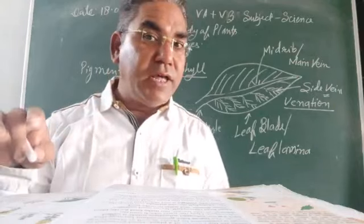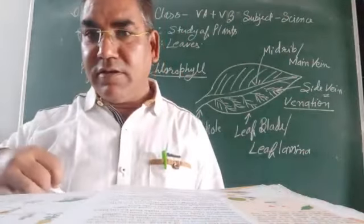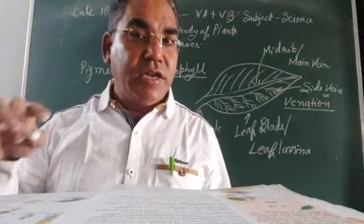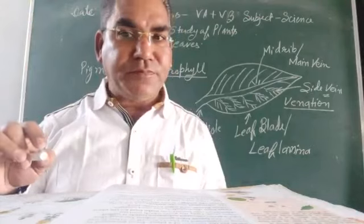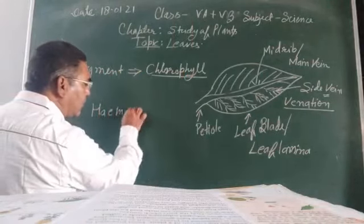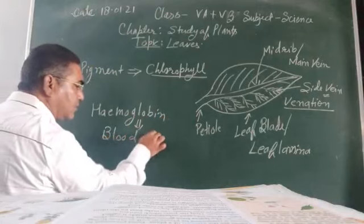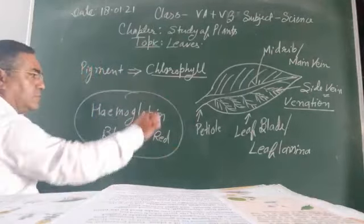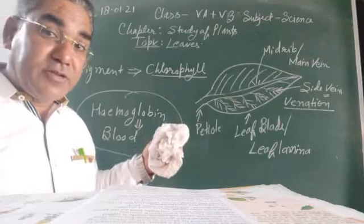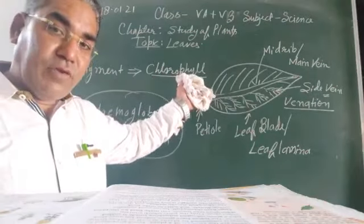Do you know what color your blood is? Yes, our blood is red in color. Why? Due to the presence of a red-colored pigment called hemoglobin. Due to the presence of hemoglobin our blood is red in color. Similarly, in plants the green color is due to chlorophyll.